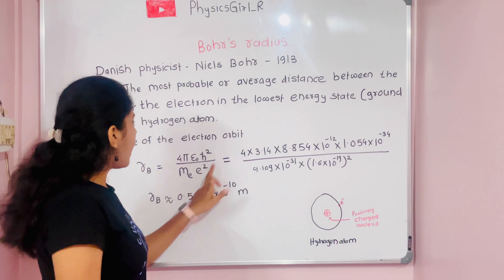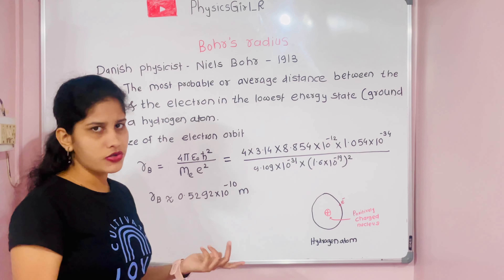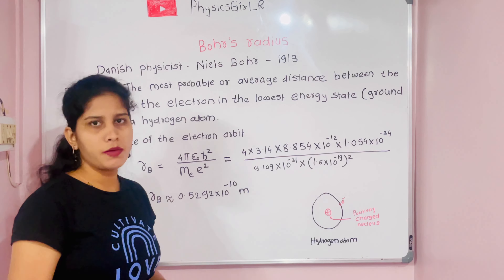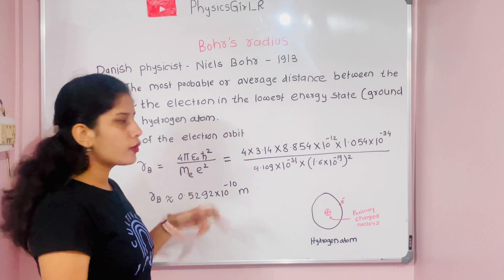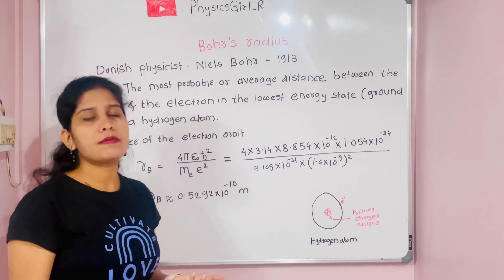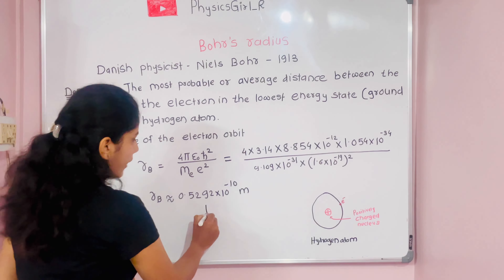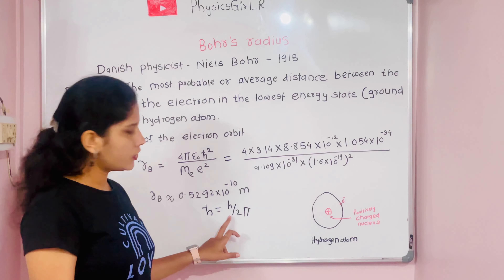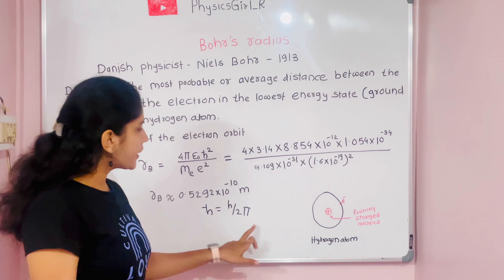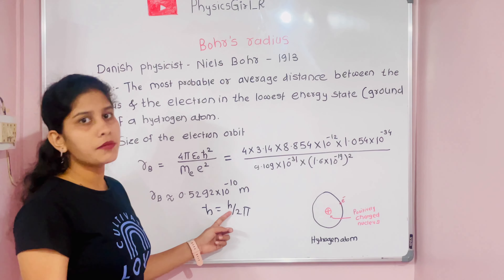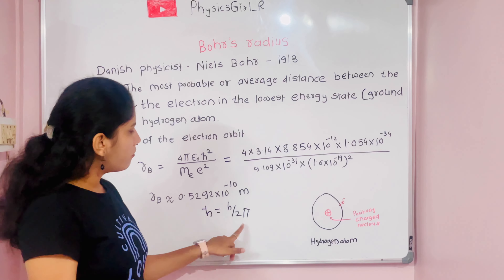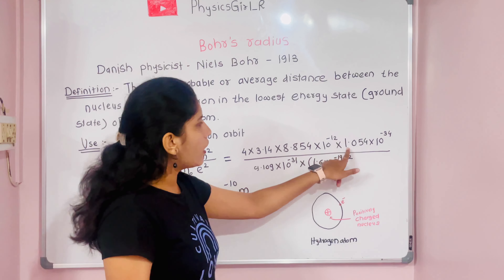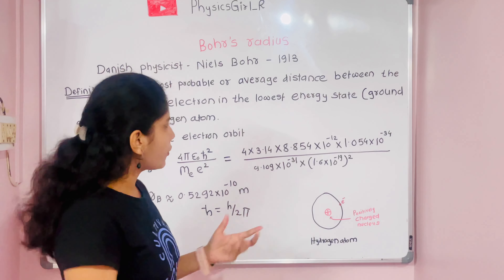All those quantities are meaningful. 4π is a constant. ε₀ is the permittivity of free space having value 8.854 × 10⁻¹² in SI units. ħ is the reduced Planck constant, equal to h divided by 2π, where h is Planck's constant 6.6 × 10⁻³⁴. After substituting and calculating, the value of ħ is 1.054 × 10⁻³⁴.